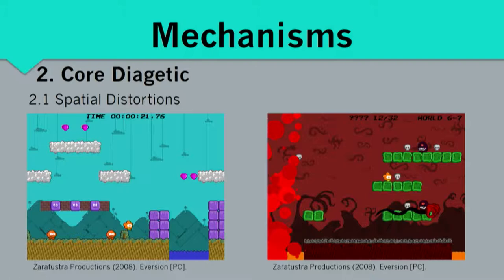In the core game world, you can encounter spatial distortions — in a sense that the world changes its meaning. This game is called Eversion, which is basically a cute platformer. But there are aversion points, and when you walk into them, you go into another layer of reality — it goes from really cute, like on the left, to horrible nightmare visions on the right. The layout is still the same, but the meaning of the different blocks and characters changes depending on which layer of reality you're in.